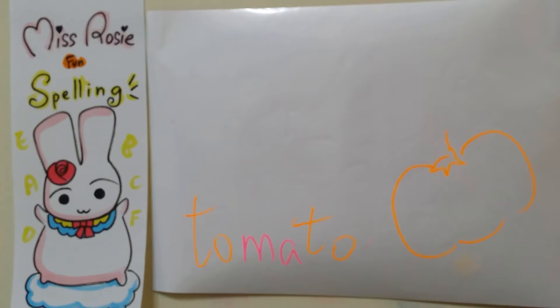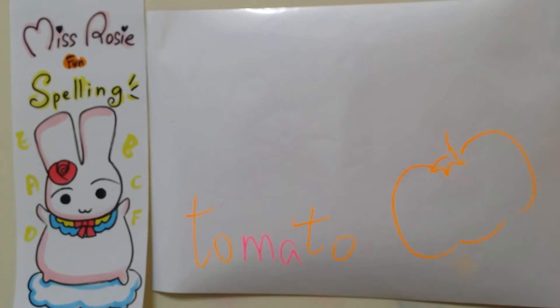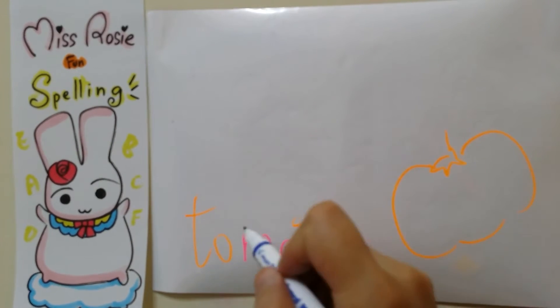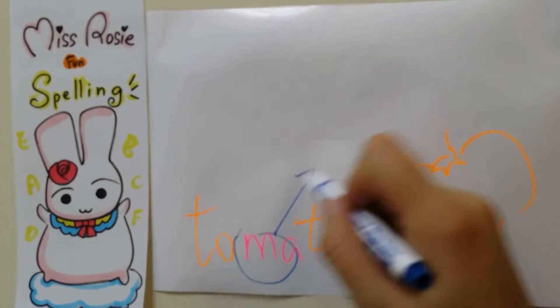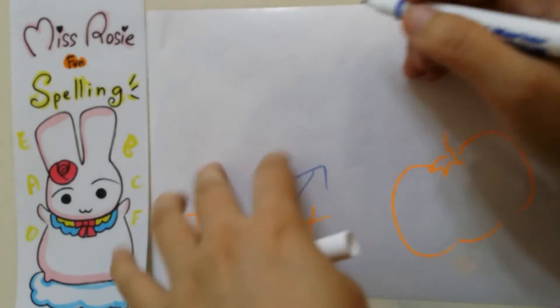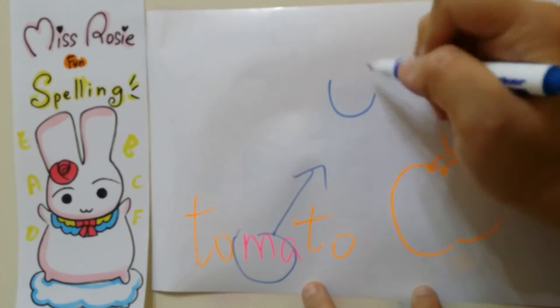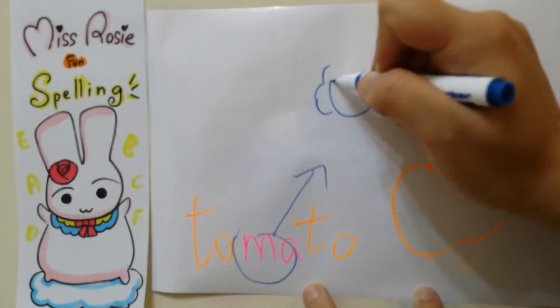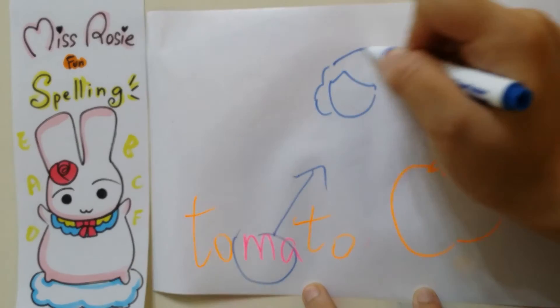So how do we remember this word? First, we have 'ma' in the middle. Ma. And then we have a mom here — hi, I'm Mama.